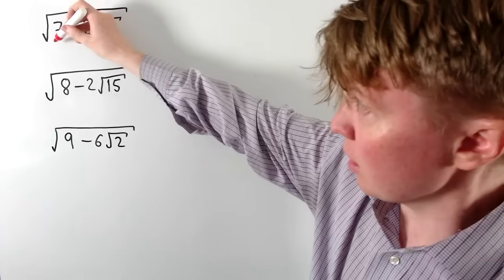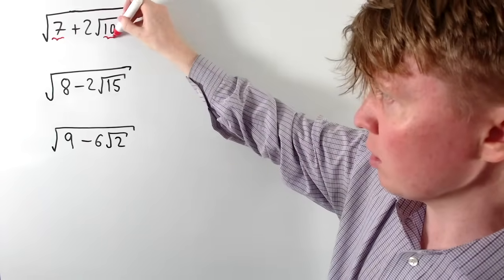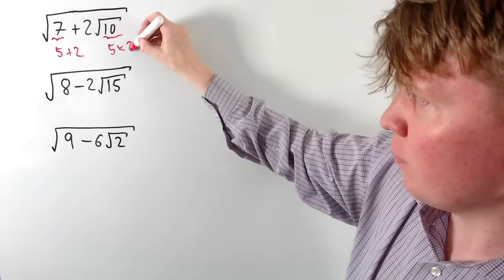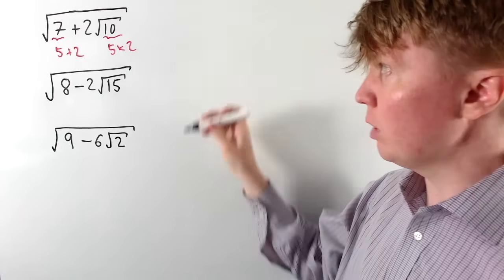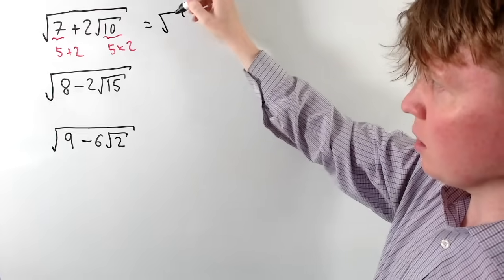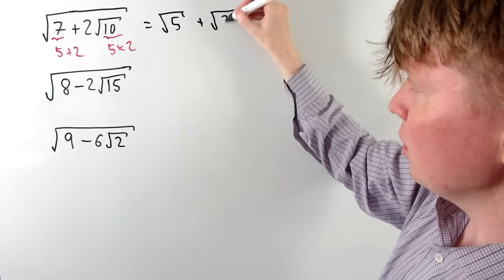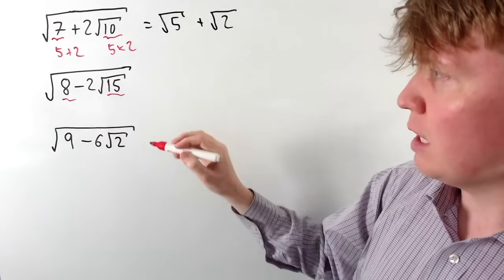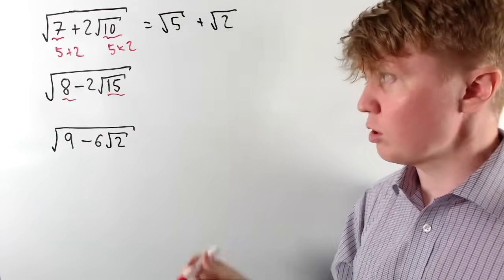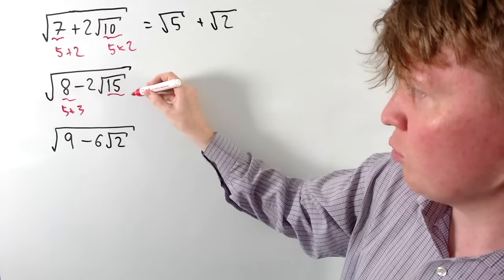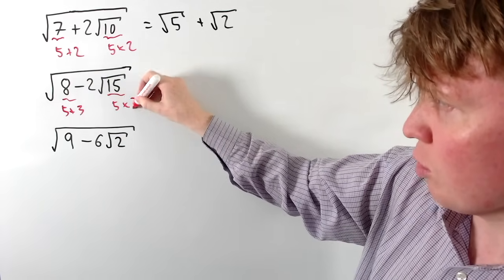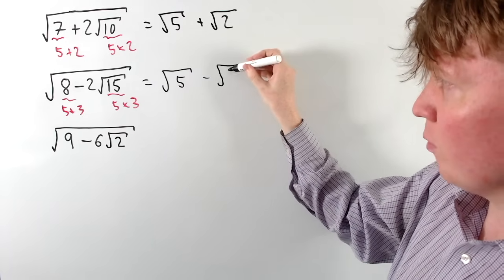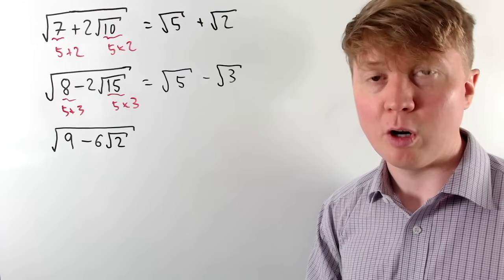So first of all, the trick. How this works: we take the first number 7 and consider the number 10. We can write 7 as 5 plus 2, and 10 as 5 times 2. This allows us to denest this expression as the square root of 5 plus the square root of 2. And for the second one we've got 8 and 15 — even though we've got a negative sign we can apply the same trick. So 8 is 5 plus 3, and 15 is 5 times 3, giving us root 5 minus root 3.